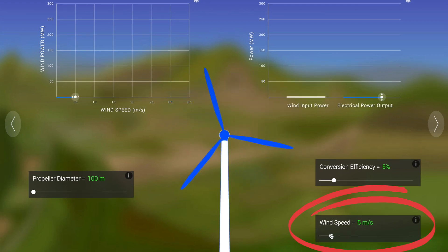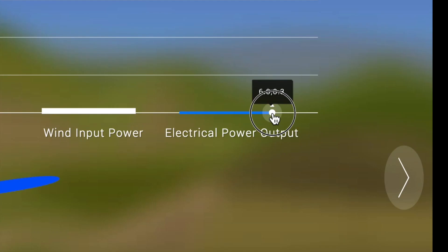Finally, we have wind speed. This is what we're going to change. And each time we change the wind speed, we're going to click right here to take a look at how the electrical power output changes.